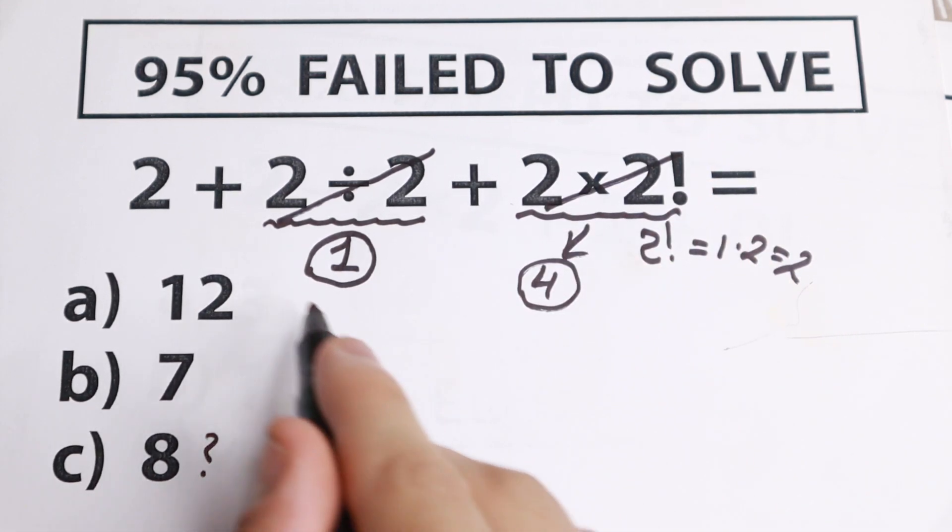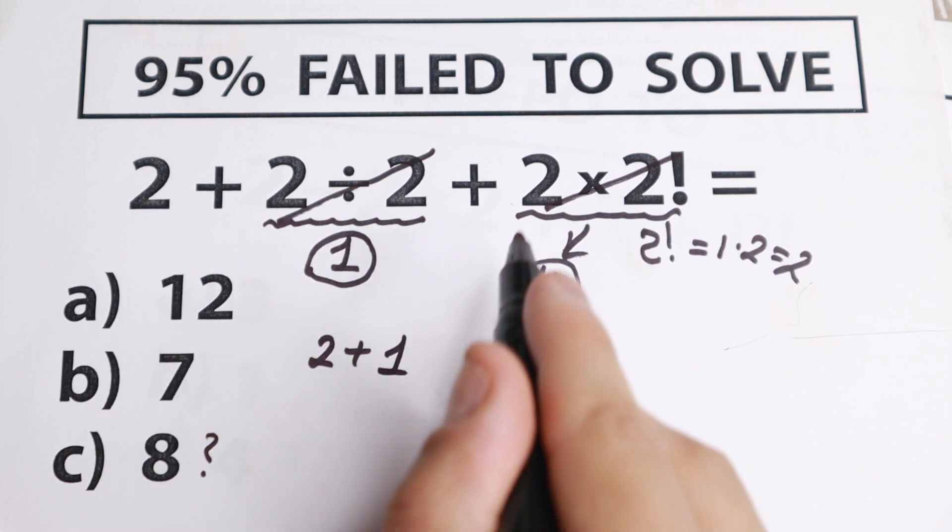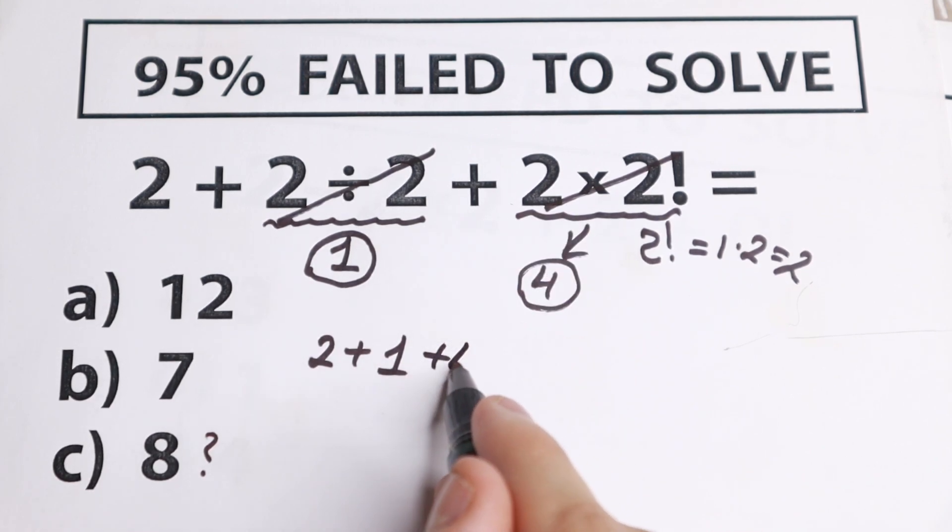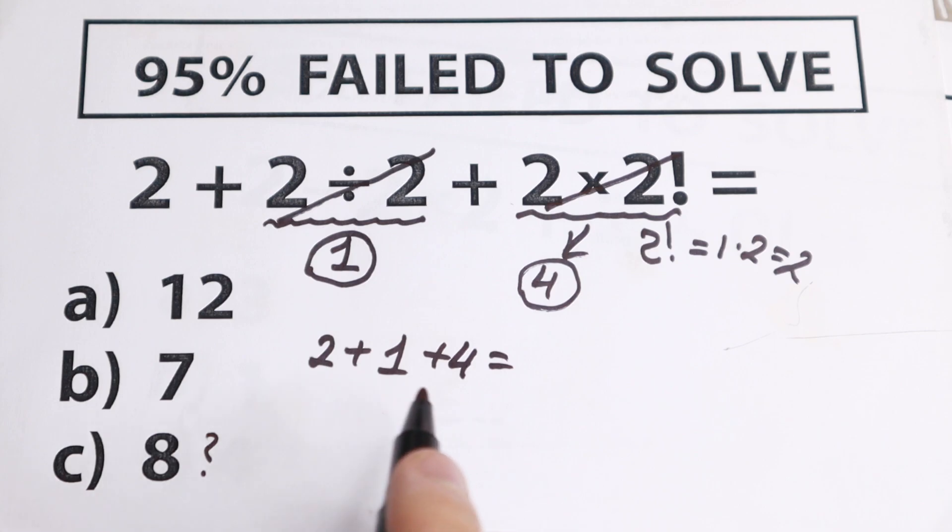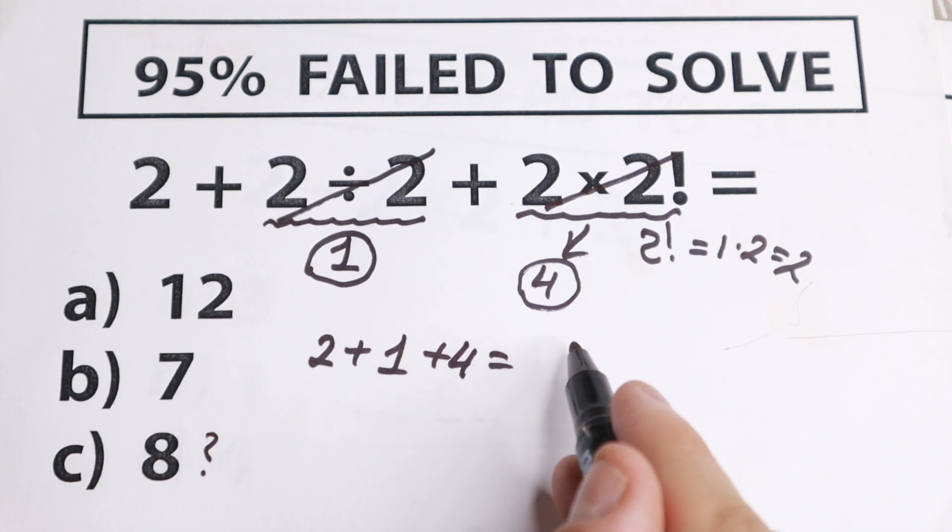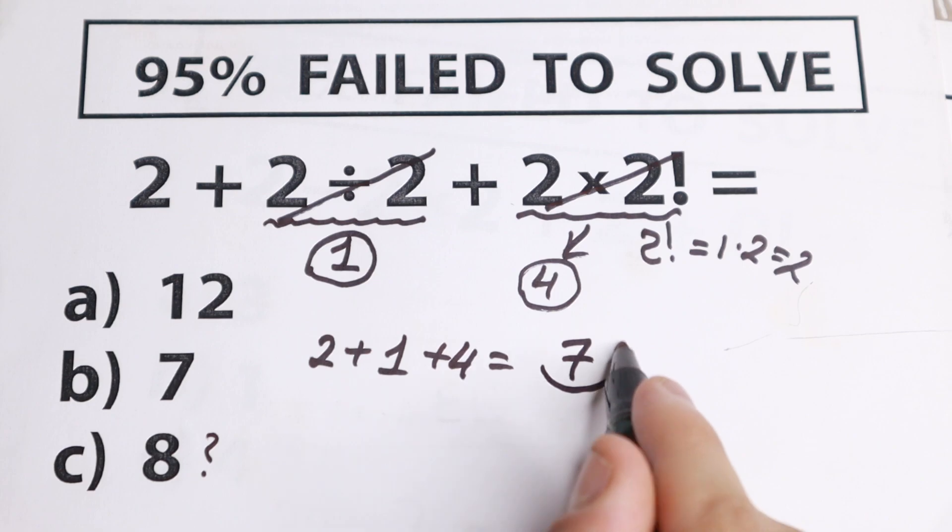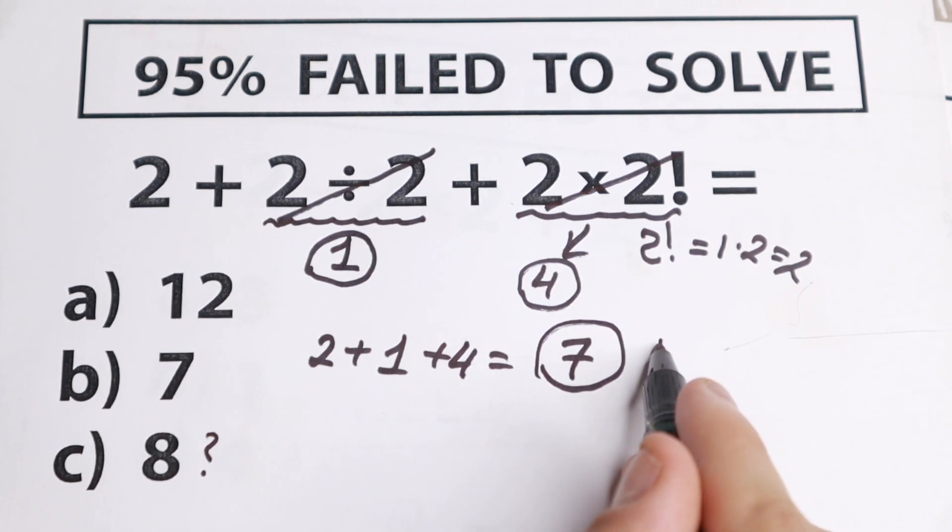So we have 2 plus right here, we have only 1. Right here, we have only 4 plus 4. Let's add all of this. What we'll have? 2 plus 1, we'll have 3. 3 plus 4, we'll have 7. So this is our correct answer option, option B.